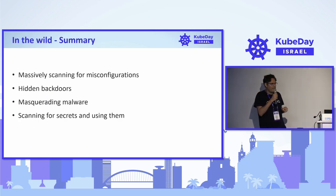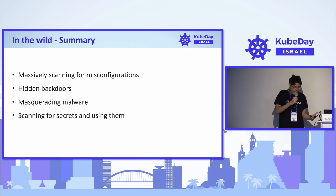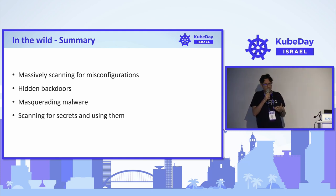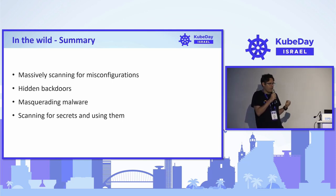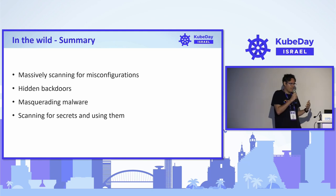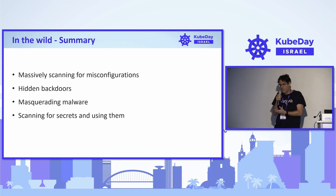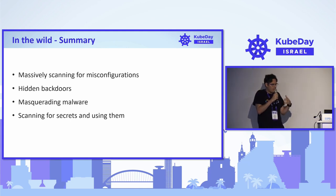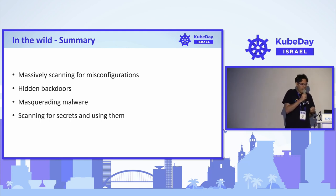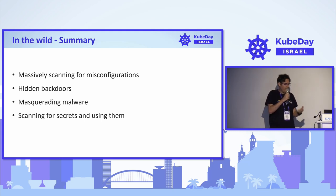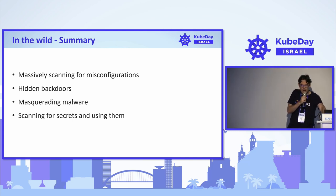To sum up attacker behavior: they are massively scanning for misconfigurations and vulnerabilities. They hide backdoors, so even after closing the initial access point — and in large organizations it took between three hours and a few days to discover the misconfiguration — they maintain access. They masquerade malware and malicious tools, and they actively scan for and use secrets.